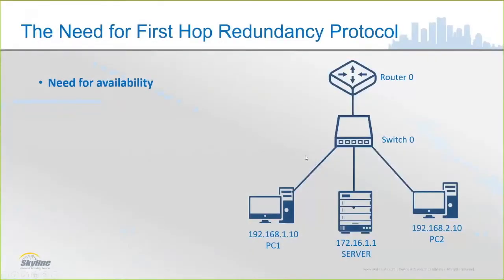The first thing we're going to talk about is the need for a first-hop redundancy protocol. If you think about the diagram you see on the right, you see a very small picture of a data center, and in the center we have a server. That server is theoretically serving important content for an enterprise — whatever application you may be thinking of, it's serving important content. And whenever it wants to send data off of its subnet, it has to send it through its default gateway.